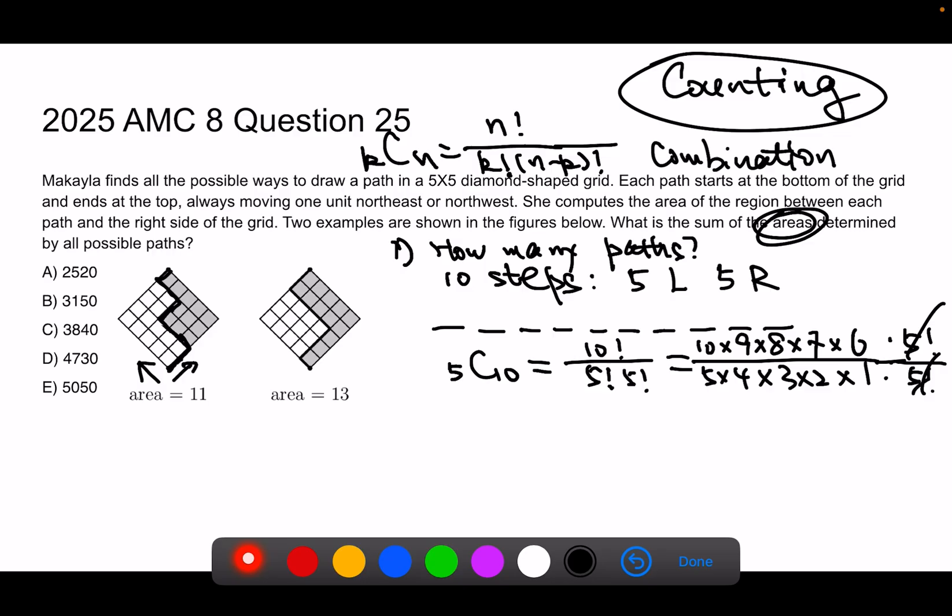Now let's try to cancel a few more numbers. 6 will cancel with 3 and 2. And 4 and 8, you will get a 2 left. 5 and 10, you will get a 2 left. So this is going to be 4 times 9 times 7, which is 252. So I know there are 252 paths.